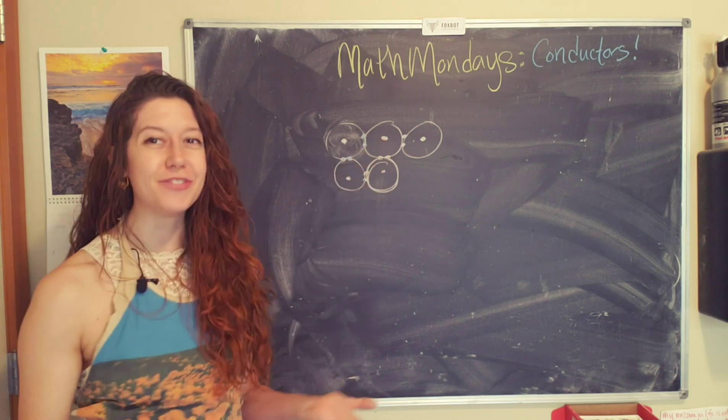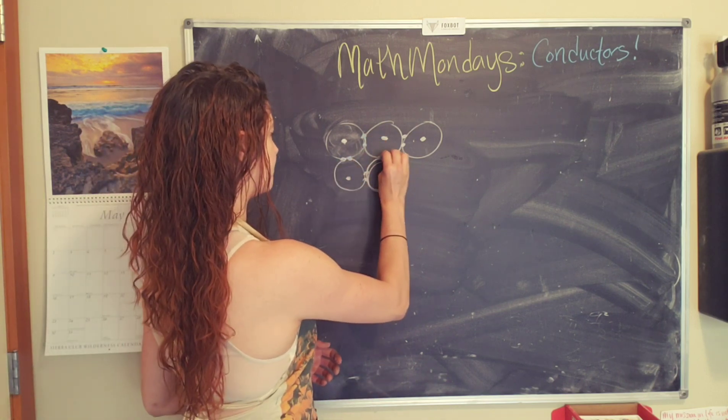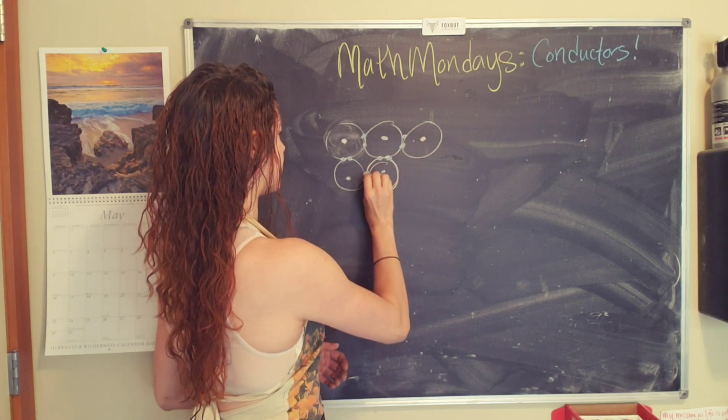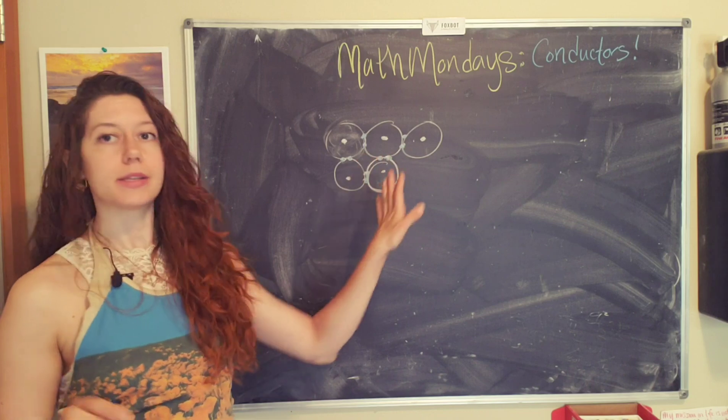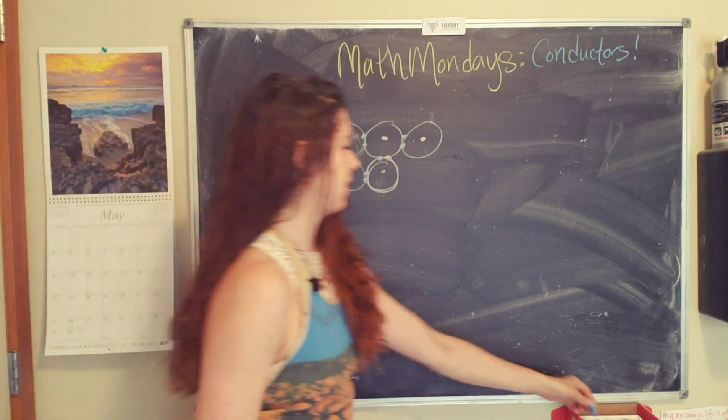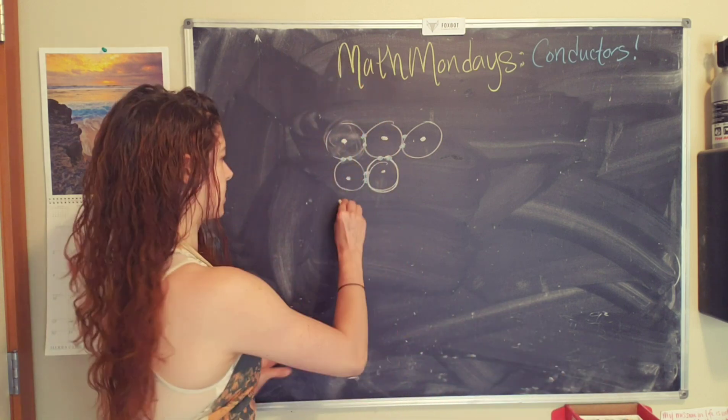So what this means is that these electrons aren't really free to move about because they have to kind of stay within this sharing space. But in, so this is an insulator.